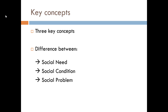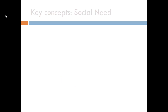It's important to understand the differences between these three concepts because social welfare policies and the programs that come from them are designed to address social problems. As social workers, that's what we're interested in — addressing social problems. But not everything is considered a problem that we as a society have to do something about. So how do we know if something is actually a need, a condition, or a problem? We'll go over each one separately.